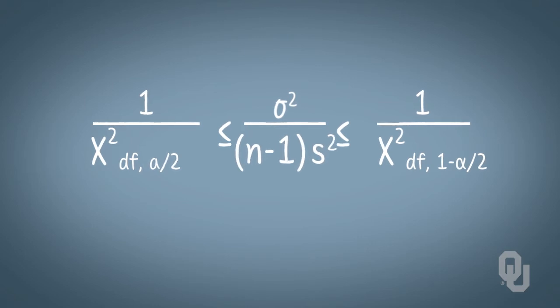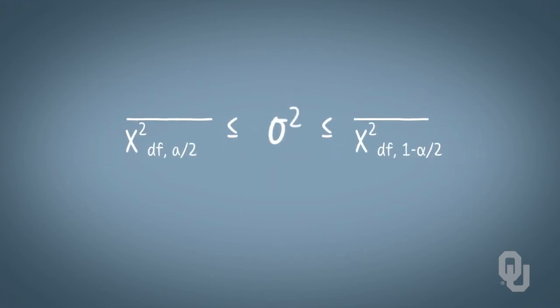Then we multiply through both sides by n-minus-one times s-squared to arrive at the confidence interval for sigma-squared. That is, sigma-squared lies between n-minus-one times s-squared divided by chi-squared for the particular degrees of freedom, alpha over two on the lower bounds, and n-minus-one times s-squared divided by chi-squared for our particular degrees of freedom, one minus alpha over two for the upper bound.